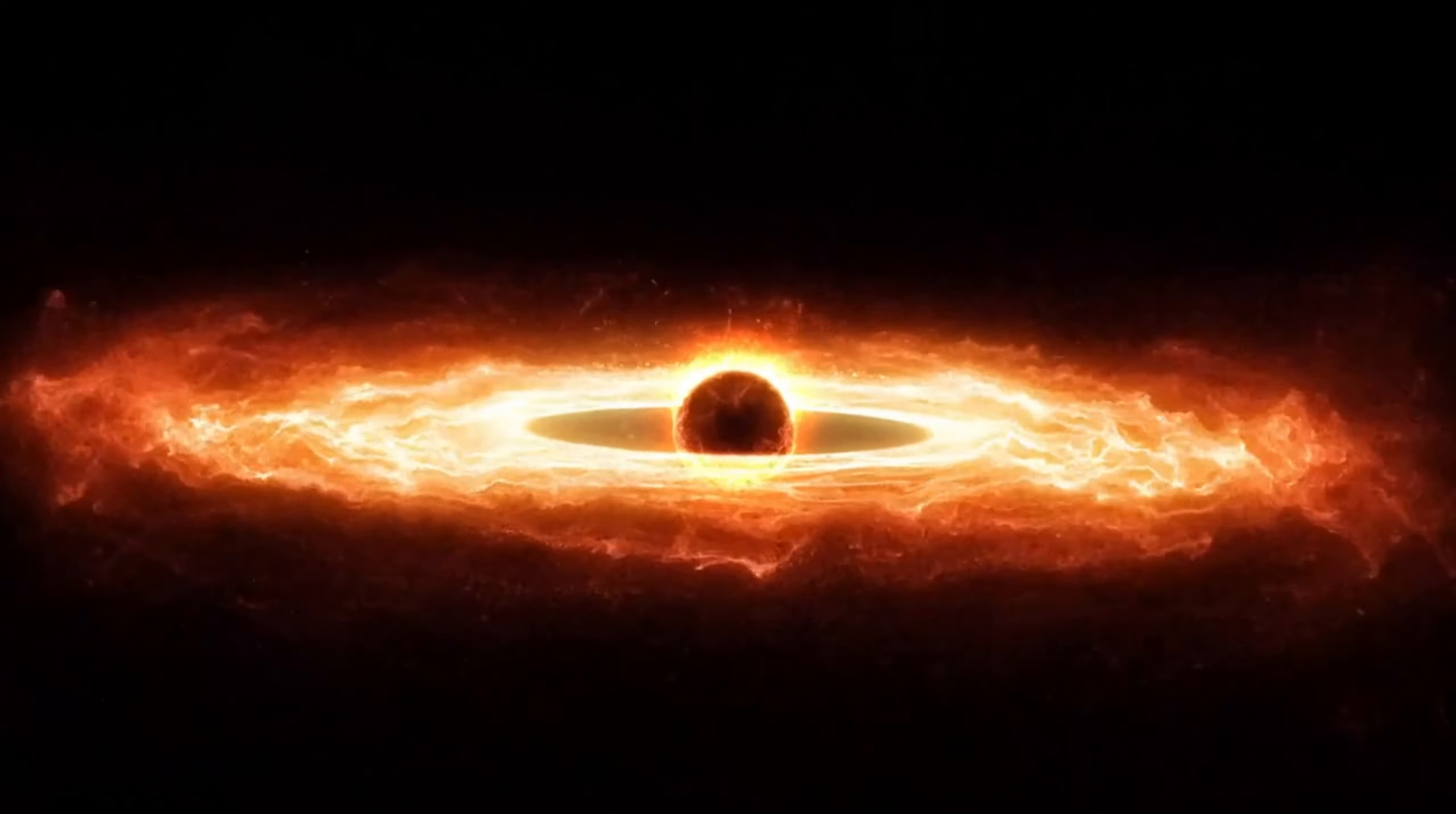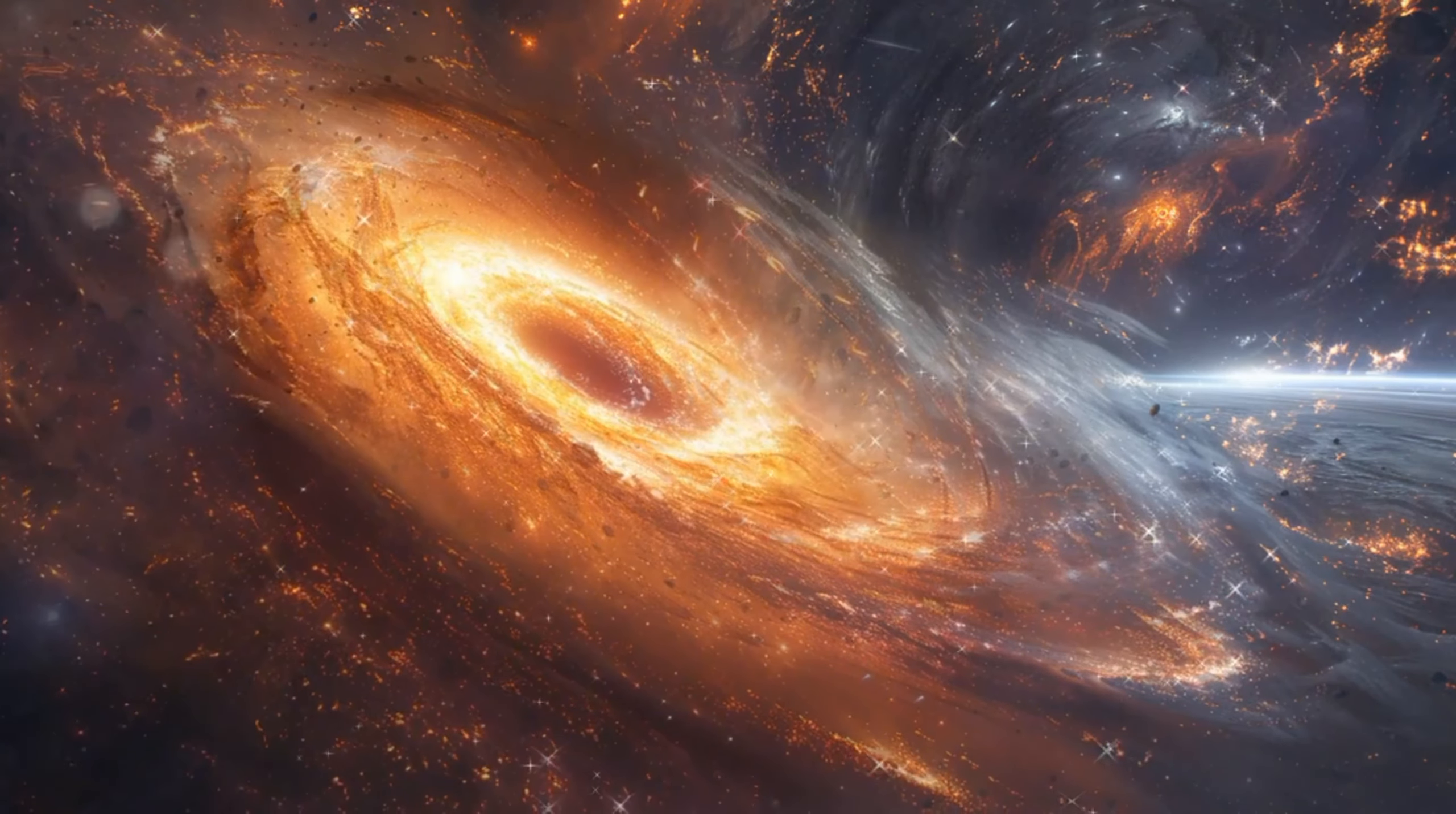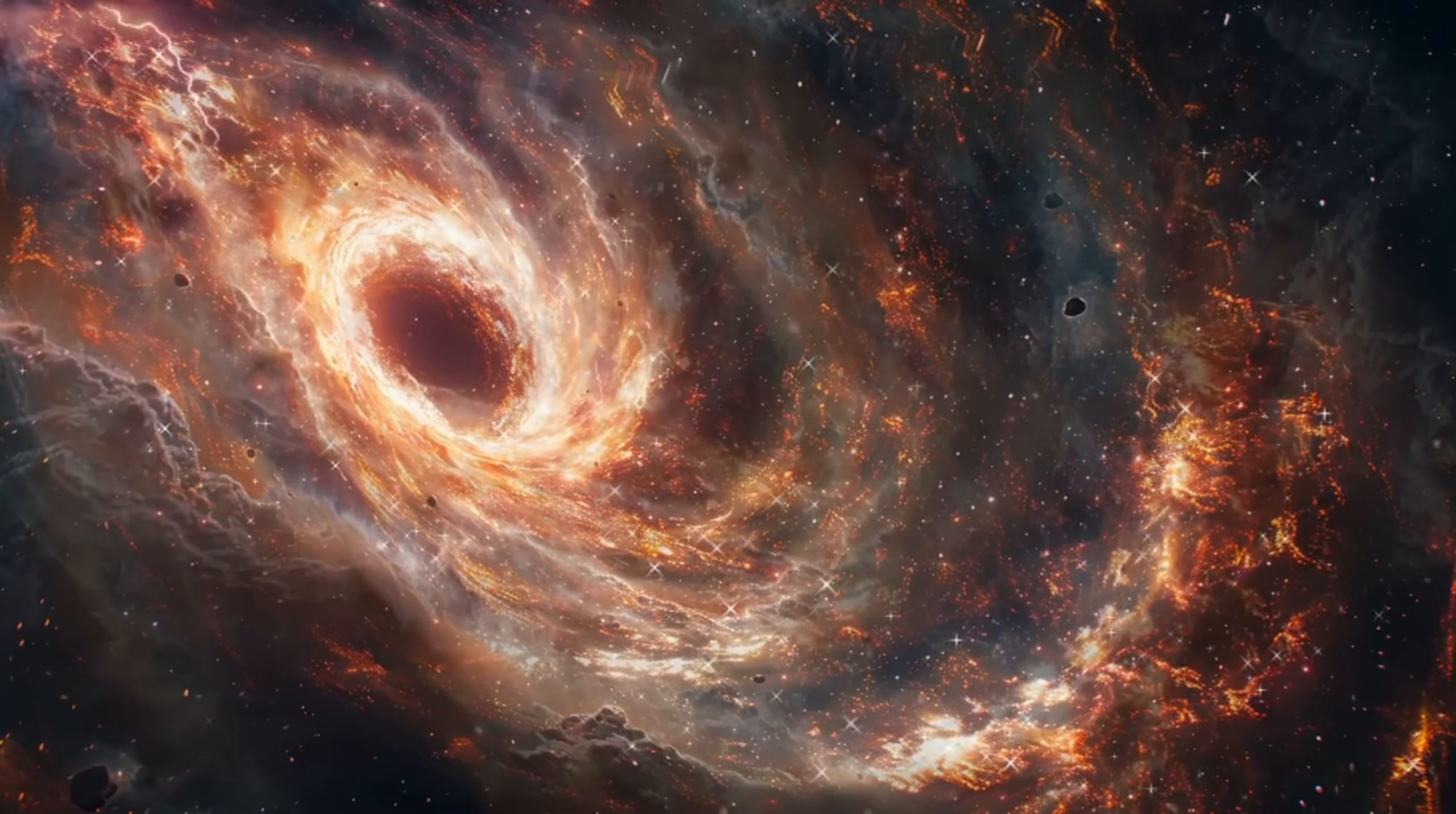It's not easy to identify black holes as they emit no light. However, researchers have found ways to interpret their presence by noticing effects on nearby matter. For example, if a black hole passes through interstellar matter, it will pull matter toward it in a process called accretion. When a normal star gets too close, it can be destroyed, emitting x-rays.